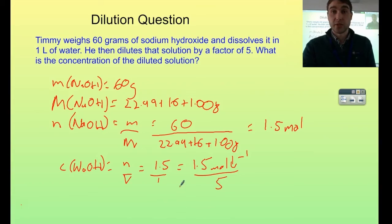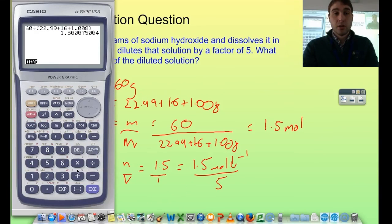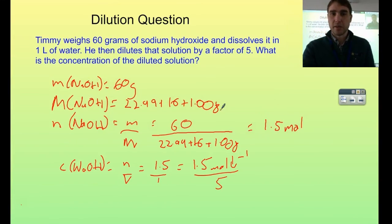So 5 times less concentrated. I go to my calculator, divide that by 5, and I get 0.3. So doing the dilution, we get 0.3 moles per litre. I've diluted it by a factor of 5, going from 1.5 moles per litre down to 0.3 moles per litre.